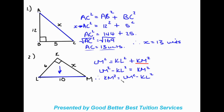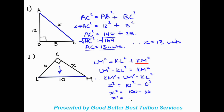Now we substitute in x for KM since they said KM equals x, so x squared equals LM squared minus KL squared. LM is 10 so that's 10 squared, minus 6 squared. So x squared equals 100 minus 36, which gives me 64. Taking the square root to get x by itself, x equals the square root of 64, which gives me 8. Therefore x equals 8 units.